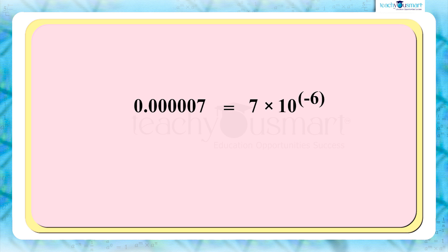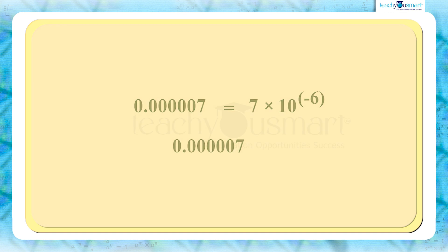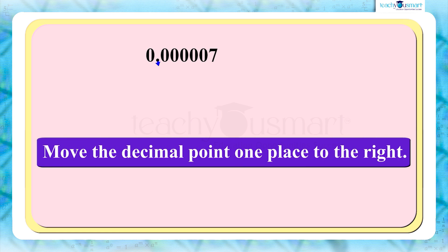Let's see how these two forms represent the same number. The given number is 0.0000007. In order to find the scientific form of small numbers, we need to move the decimal point to the right of the first non-zero number. In this case, the non-zero number is 7. Let's do this step by step. When we move the decimal point one place to the right, the new number we get is 10 times larger than the original number.